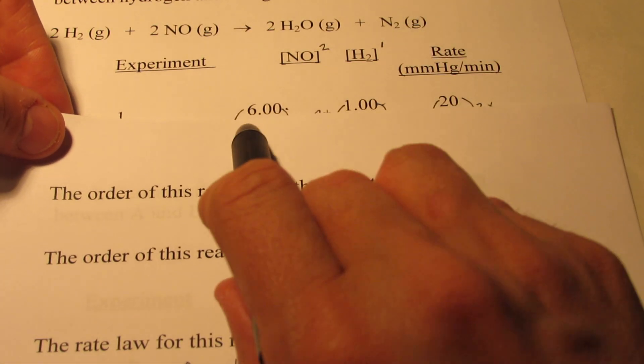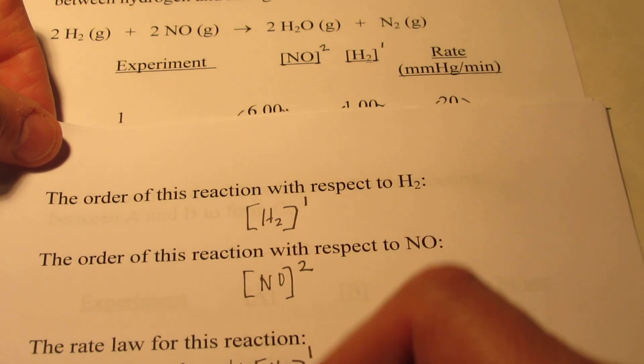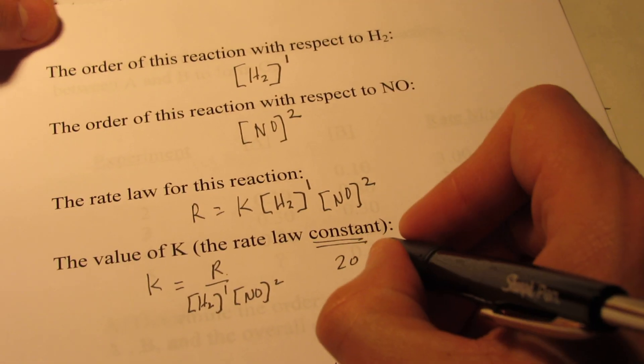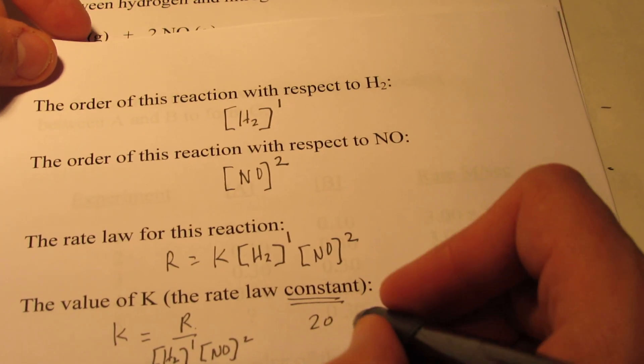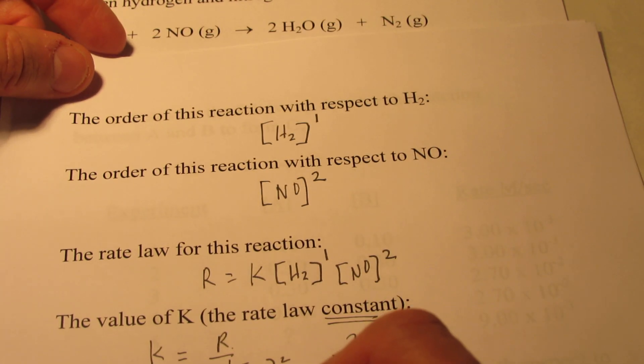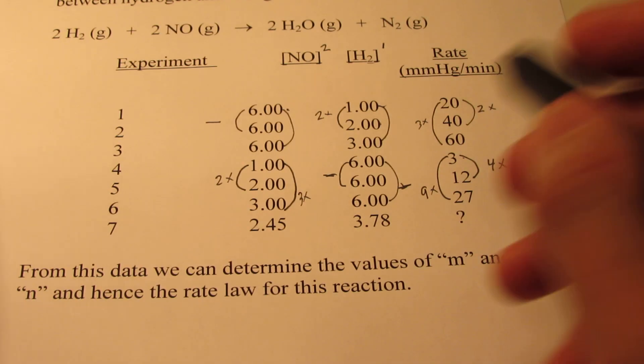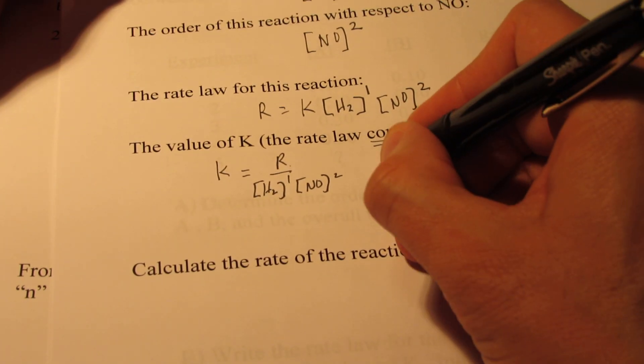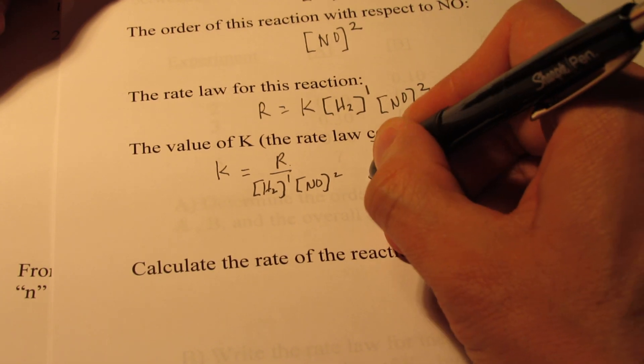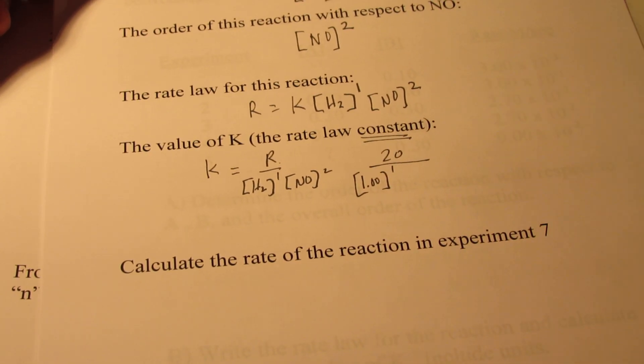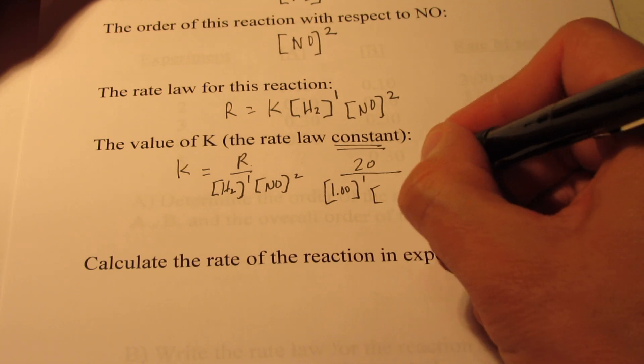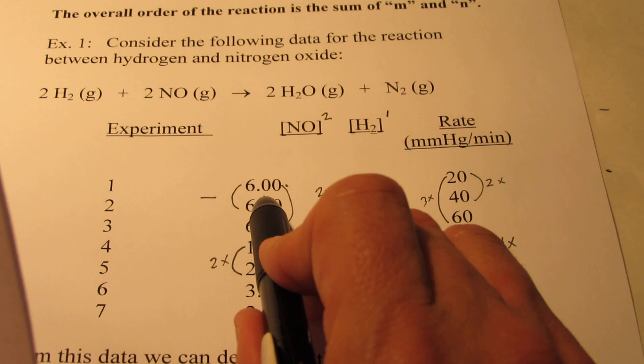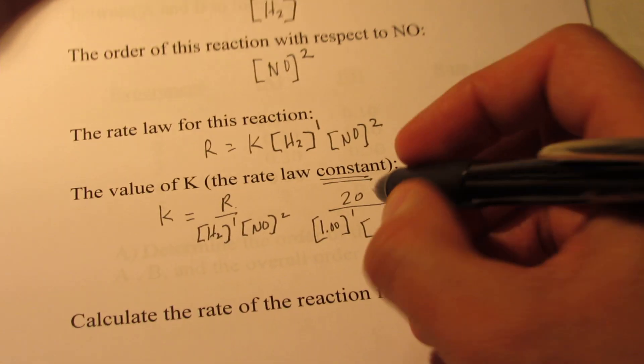I like to use experiment one because it's easy to read the data. So the rate for experiment number one is 20, and that's millimeters of mercury per minute, divided by the concentration of H2 in the first experiment, which is 1.00, and we're going to call that molarity units, but we will leave it unitless for right now, and then divided by the concentration of NO squared, and the NO concentration in the first experiment is 6.00.